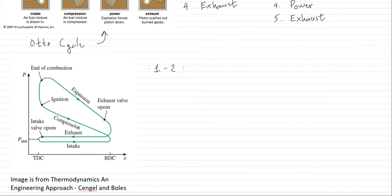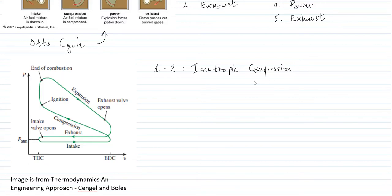So again, that is the isentropic compression. Let's write that down. Isentropic compression means the process involved is an isentropic process, meaning the compression involves no addition of heat and no removal of heat.